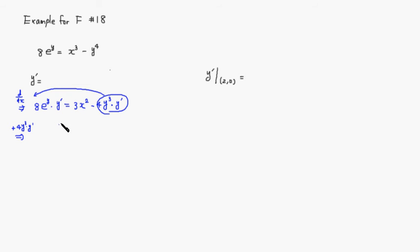So you're going to have 8e to the y, y prime, which is this guy. Now we're adding 4y cubed times y prime, and is equal to, we still have 3x squared.